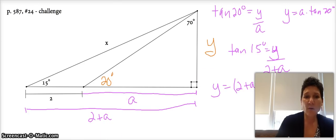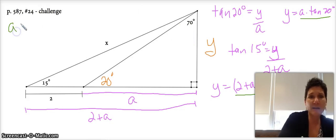Now if you notice, Y equals this and Y equals that. So if Y equals this and Y equals that, doesn't it make this guy equal to that guy? I hope you said yes. Now I'm going to come on over here because I need some space and I'm going to set them equal to each other. So I have that A times the tangent of 20 is equal to 2 plus A times the tangent of 15.